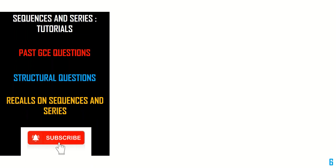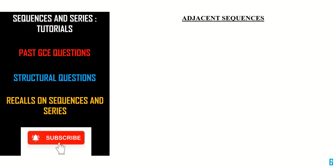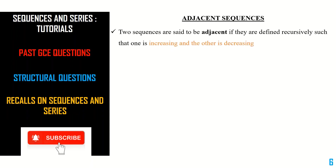We will end today's video by looking at adjacent sequences. Two sequences are said to be adjacent if they are defined recursively such that one is increasing and the other is decreasing. Defined recursively means one sequence is expressed in terms of the other. We already saw the definitions of increasing and decreasing sequences.